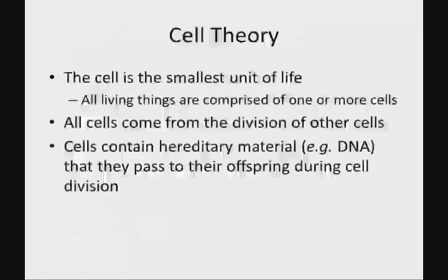Now, what this lends itself to is back to the cell theory — more stuff I want you to commit to memory. The cell theory has three points. It basically states that a cell is the smallest unit of life, meaning all living things are at least one cell or more. Based on our observations, all we know is that cells come from the division of other cells — we've never seen a cell spontaneously arise. And finally, all cells contain hereditary material in the form of DNA that they pass to their offspring during cell division.